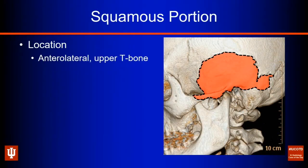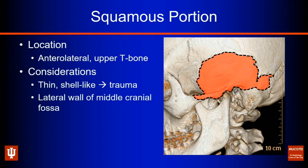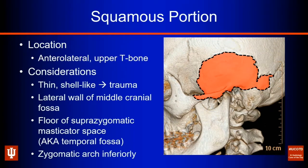There are five discrete bone components. The first is the squamous portion, which makes up the anterolateral and upper temporal bone. This is thin, shell-like bone prone to direct trauma — a lateral blow may fracture this area. It makes up the lateral wall of the middle cranial fossa and the floor of the suprazygomatic masticator space or temporal fossa. It has an appendage that sticks out antero-inferiorly: the zygomatic arch.